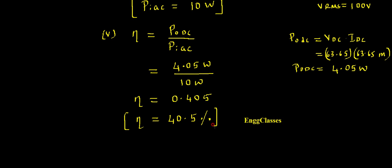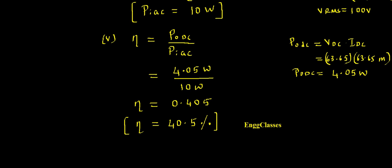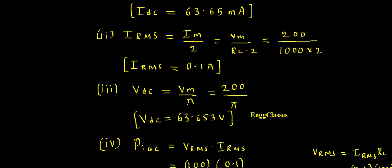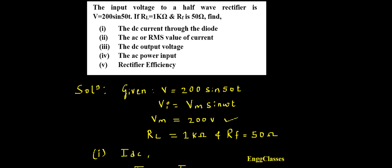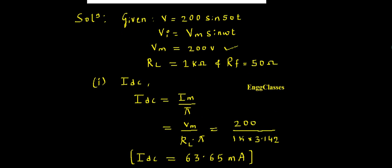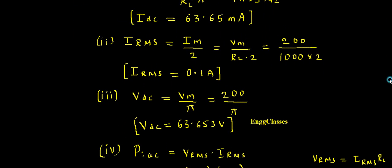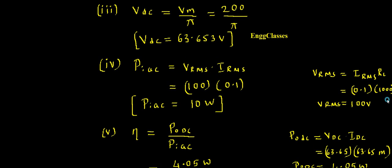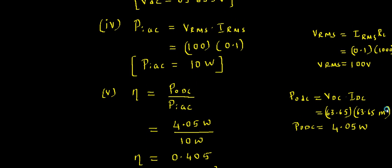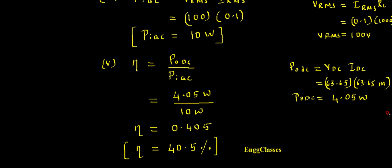The half-wave rectifier efficiency is 40.5%. We also know theoretically the efficiency of a half-wave rectifier is 40.5%, so our result matches. In this video we found the various parameters: IDC, IRMS, VDC, PI_AC, and rectifier efficiency. I hope you understood — if there are any doubts, please let me know in the comment section. Thank you for watching.